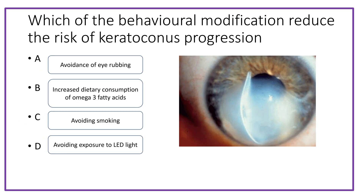Next question: which behavioral modification reduces the risk of keratoconus progression? The options are avoidance of eye rubbing, increased dietary intake of omega-3 fatty acids, avoiding smoking, or avoiding LED light exposure.